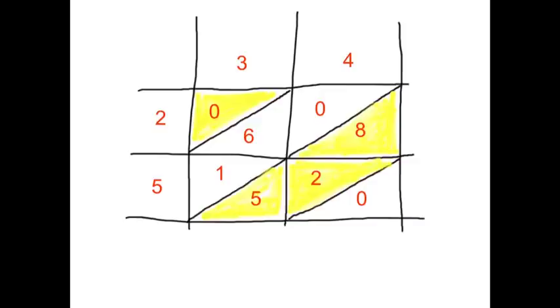You can see now that the calculations have been carried out. 2 times 3 gives us 6. So 0 10s and 6 units. 2 times 4 gives us 8. 0 10s and 8 units. 5 times 3 gives us 15. 1 10 and 5 units. 5 times 4 gives us 20.